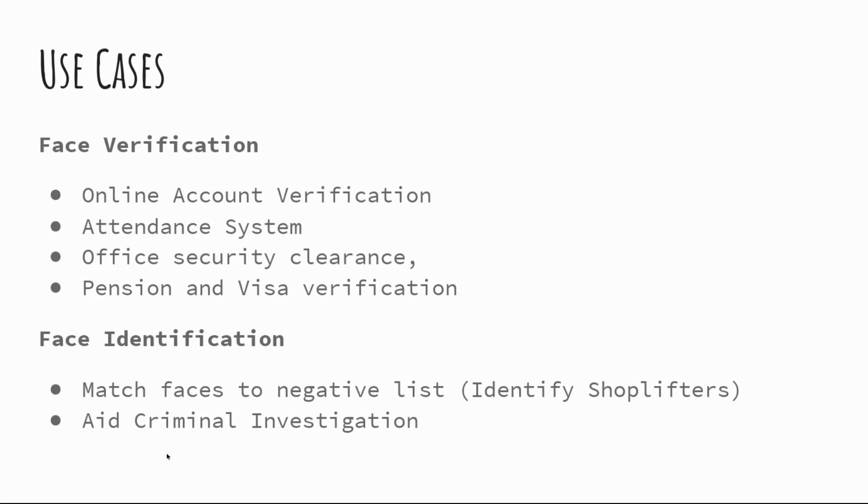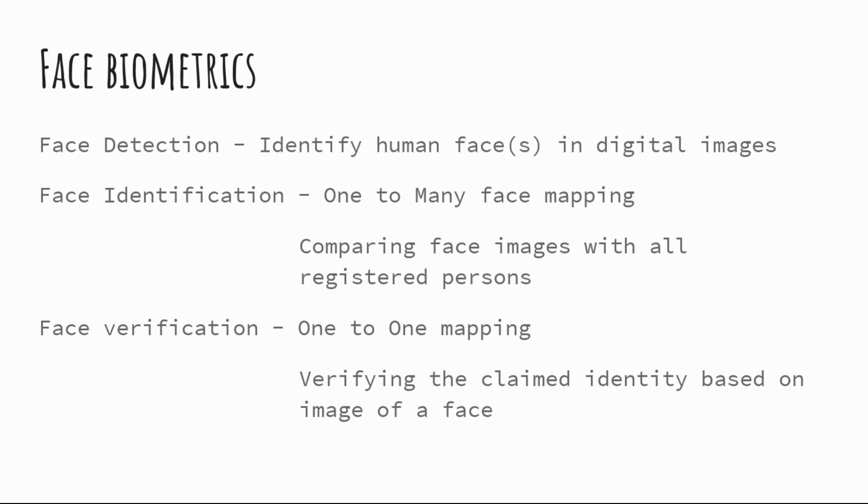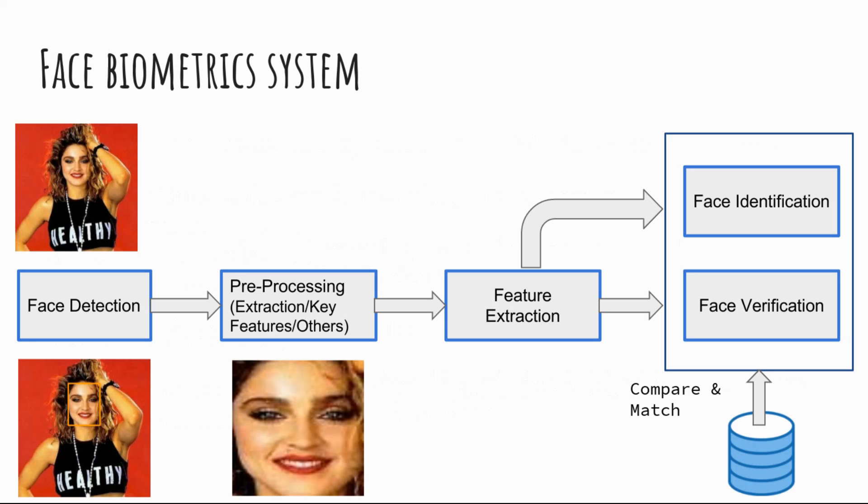You can also search huge criminal databases. If there's an issue and a person is identified at a crime scene, they can compare it against other criminal activity. These are the different use cases and components of face biometric systems.